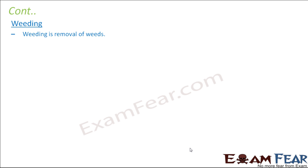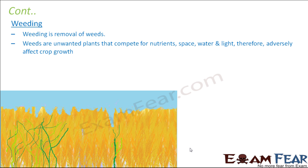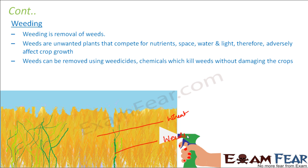Weeding is the removal of weeds — unwanted plants that grow alongside desired crops. They compete with our crops for water, light, air, and space, causing losses to the crop. Weeds can be removed using weedicides, which are chemicals that kill weeds without damaging crops. However, weedicides must be diluted with water before spraying, and farmers should cover their mouth and nose while spraying as weedicides are harmful chemicals.